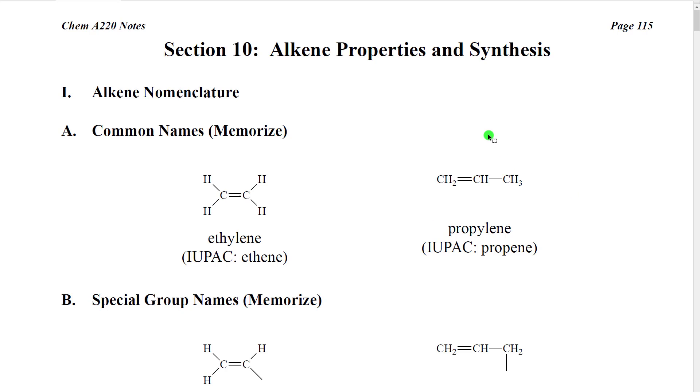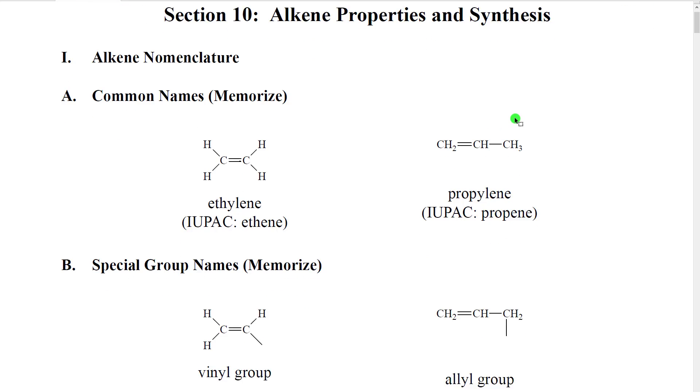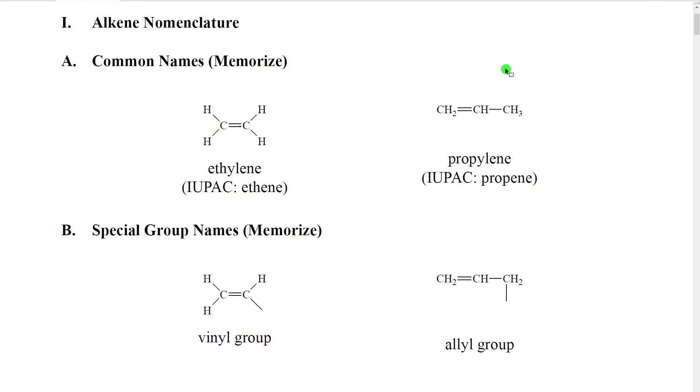In section 10, we're going to look at some of the properties of alkenes and how they're made. We're then going to continue our discussion of alkenes in section 11 where we talk about some of their reactions. The first thing we're going to cover is a little bit more alkene nomenclature, basically focusing on common names.